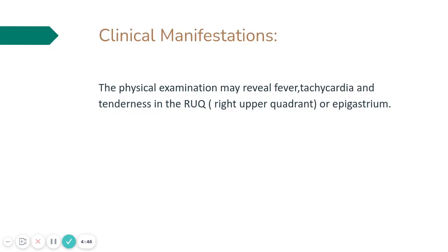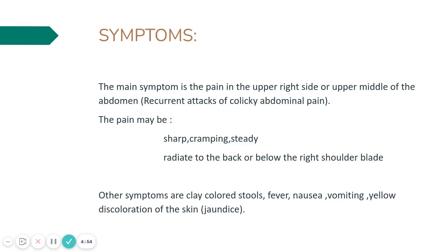Moving forward to clinical manifestations: physical examination may reveal fever, tachycardia, and tenderness in the right upper quadrant or the epigastrium. The main symptom is pain in the upper right side or upper middle of the abdomen. There may be recurrent attacks of colicky abdominal pain. The pain may be sharp, cramping, and steady, and it can radiate to the back or below the right shoulder blade.